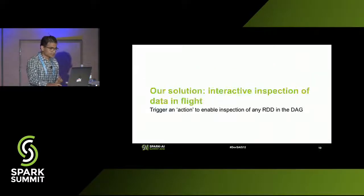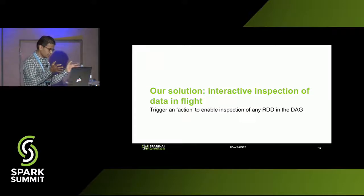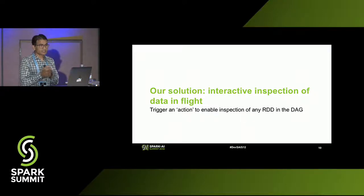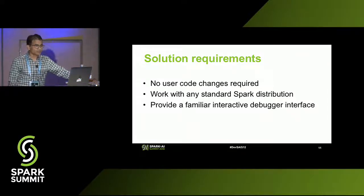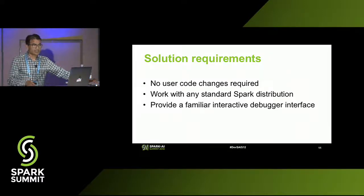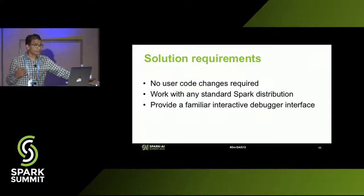So what's our solution? We're going to take that same print statement you're doing, but automate the process. We're going to trigger an action so that you can inspect any RDD in the DAG. Our requirements: no changes to your code, run it with any code either in your lab or in production, work with any standard Spark distribution, and provide a familiar debugger-like interface so you can interact with your code and inspect your data.